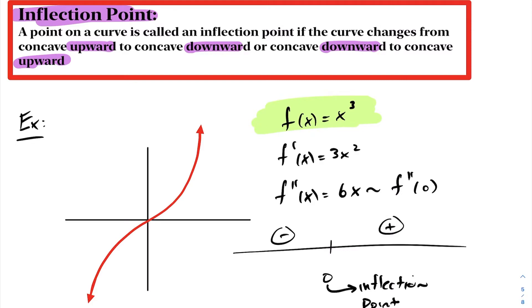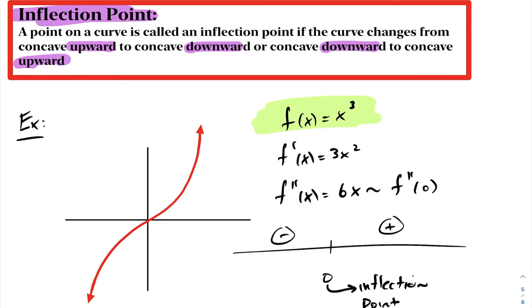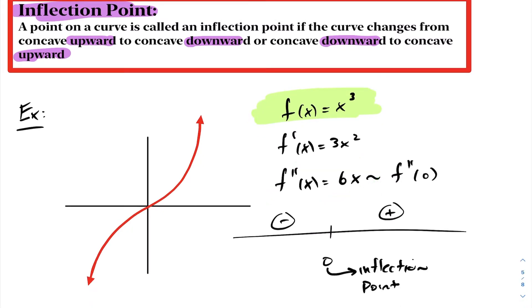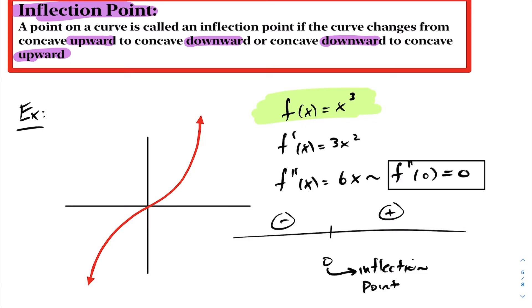One example of that function would be y equals x cubed. For the function, if we go ahead and take our first derivative, we get 3x squared, and our second derivative is 6x. Notice if we examine f double prime at zero, we get zero. And therefore, this is an inflection point.